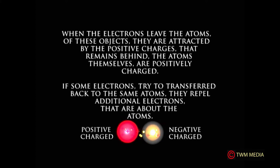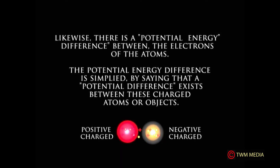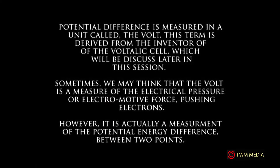The atoms themselves are positively charged. If some electrons try to transfer back to the same atom, they repel additional electrons that are around the atoms. Likewise, there is a potential energy difference between the electrons of the atoms. This potential energy difference is simplified by saying that a potential difference exists between these charged atoms or objects. The potential difference is measured in a unit called the volt. This term is derived from the inventor of the voltaic cell, which will be discussed later on in this session. Sometimes we may think that the volt is a measure of electrical pressure or electromotive force pushing electrons; however, it is actually a measurement of potential energy difference between two points.